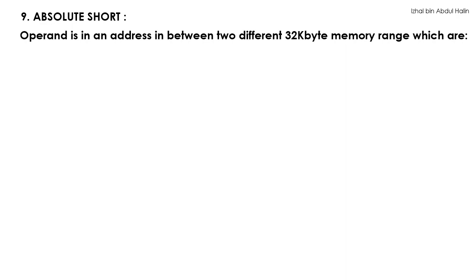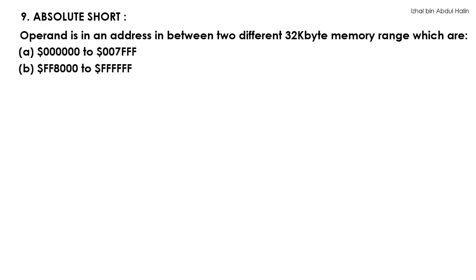Our ninth addressing mode is the absolute short addressing mode. This addressing mode may be used to obtain the operand which lies in one of two 32KB memory blocks. The operand must lie in between address 0 and 7FFF, or between FF8000 and FFFF for you to use this addressing mode.